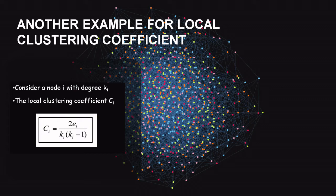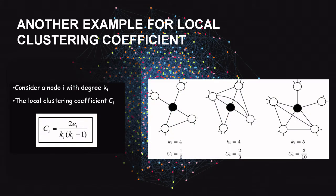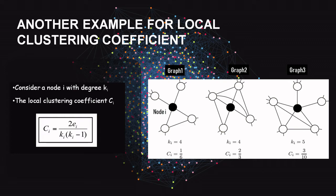Applying the formula to examples: in graph 1, ki equals 4, so there are six possible edges among the four neighbors, with only one present — giving Ci = 1/6. In graph 3, ki equals 5, the maximum possible edges among five neighbors is 10, and there are three edges present — giving Ci = 3/10.